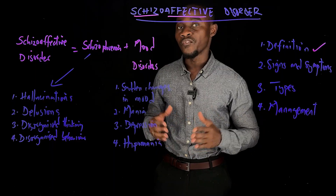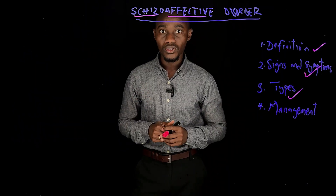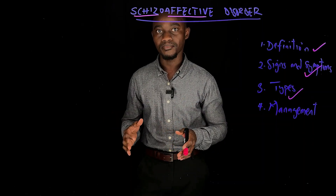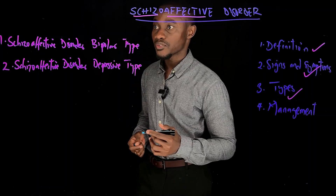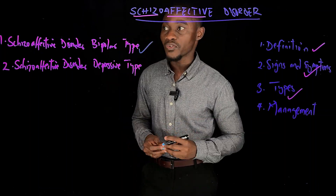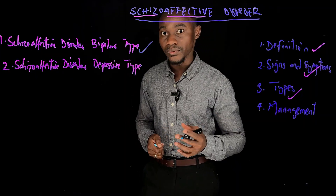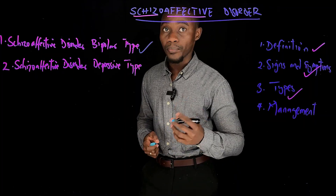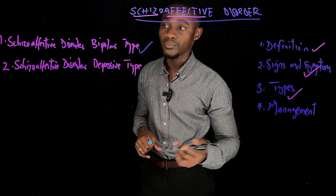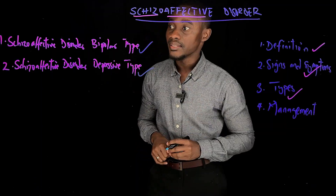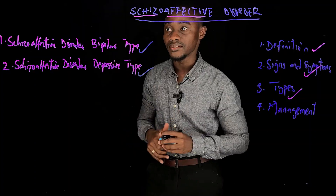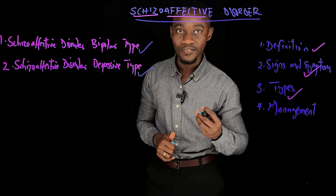This brings us to the types of schizoaffective disorder. There are two forms: the bipolar type and the depressive type. Individuals with the bipolar type exhibit signs and symptoms of schizophrenia such as hallucinations and delusions alongside signs and symptoms of bipolar disorder such as mania and depression. Those with the depressive type combine schizophrenia symptoms with mood disorder symptoms, specifically depression.